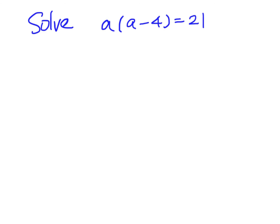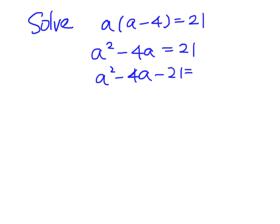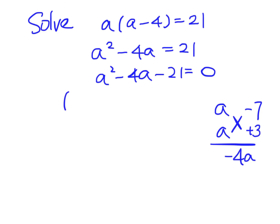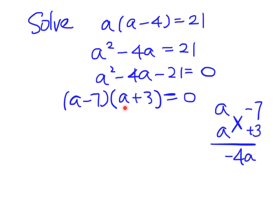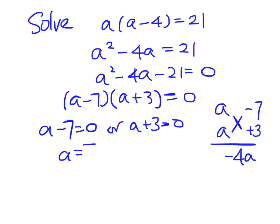Here is another example: a times the bracket a minus four equals 21. We expand the left-hand side to get a squared minus four a equals 21. Remember, we have to make one side equal to zero, so we move 21 to the left-hand side. Now we have a quadratic equation, and we factorize it using the cross method to get a minus seven times a plus three equals zero. Therefore a equals seven or a equals minus three.